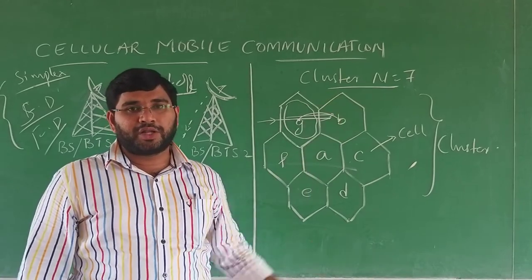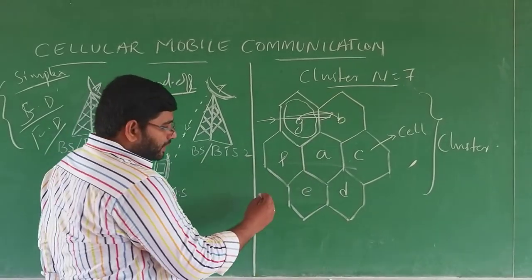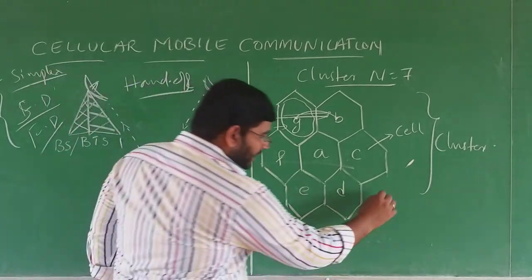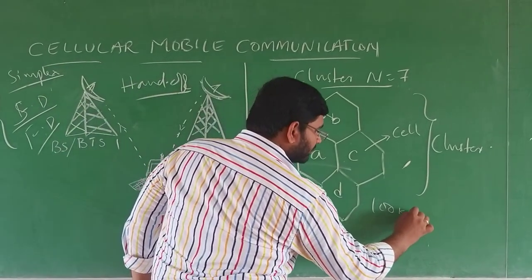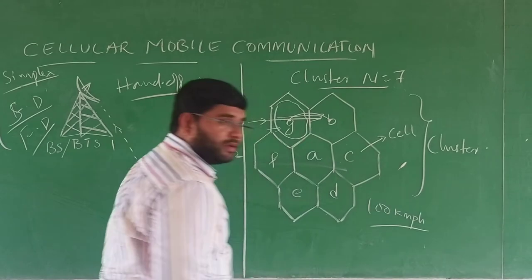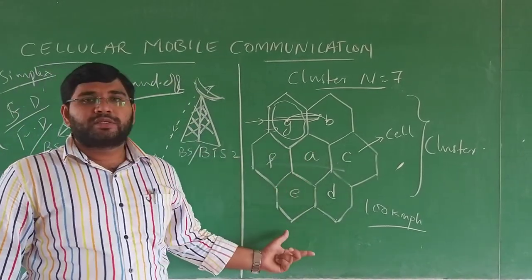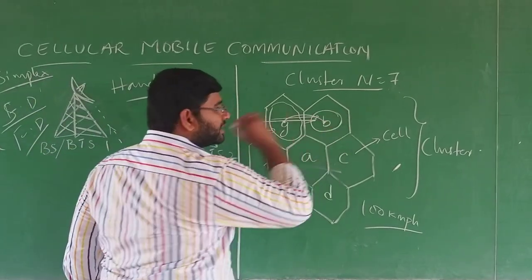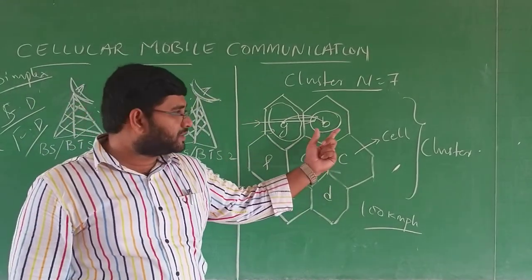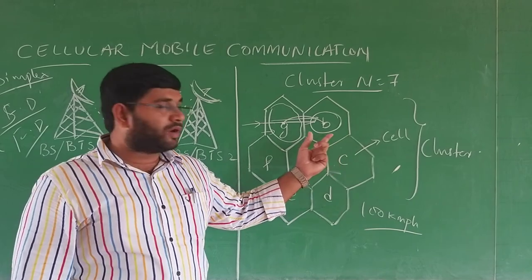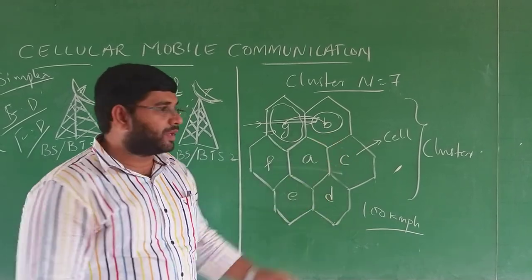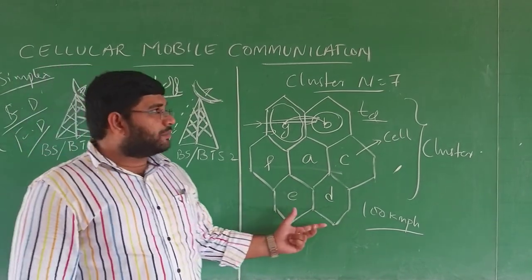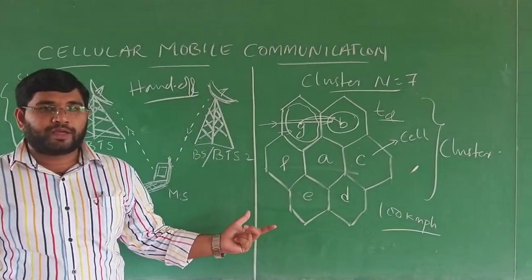If the distance is far larger — for example, a person is moving at a speed of 100 km per hour — we can use this cellular concept. If a person stays in a particular cell for a long time, we call it LTE, which stands for Long Term Evolution. So this is about the main concept of cellular mobile communication.